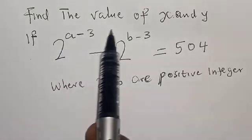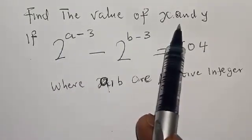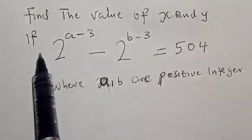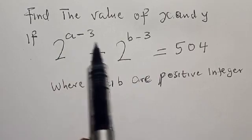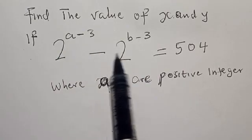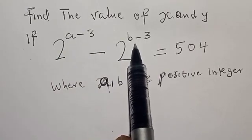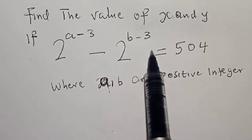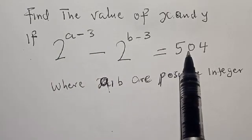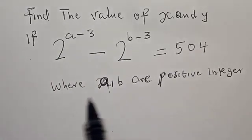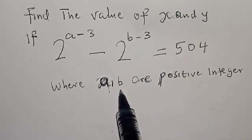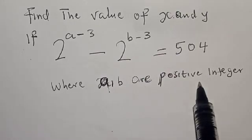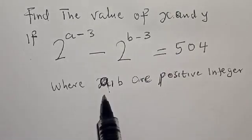Find the value of a and b if 2 raised to power a minus 3, minus 2 raised to power b minus 3, is equal to 5/4, where a and b are positive integers.